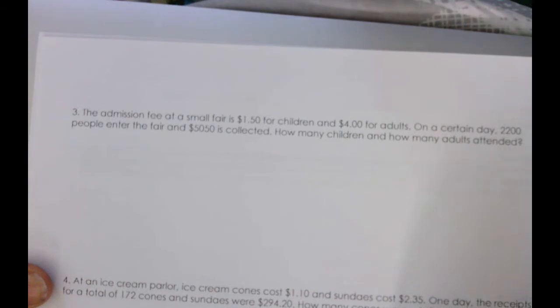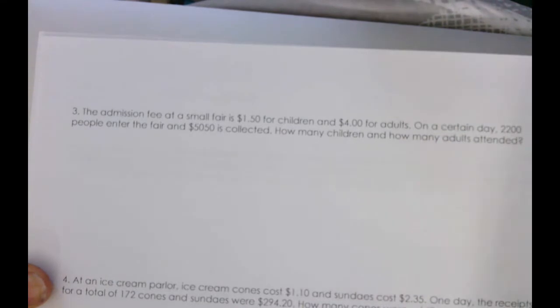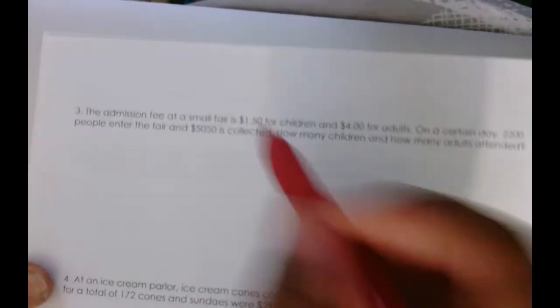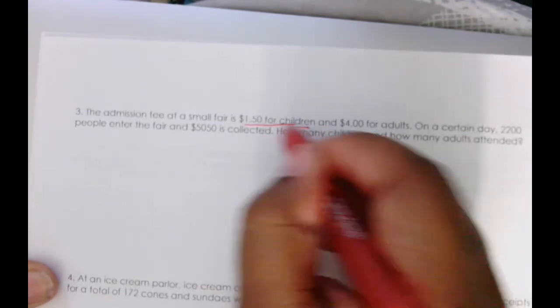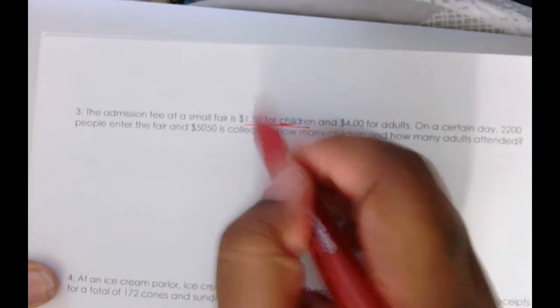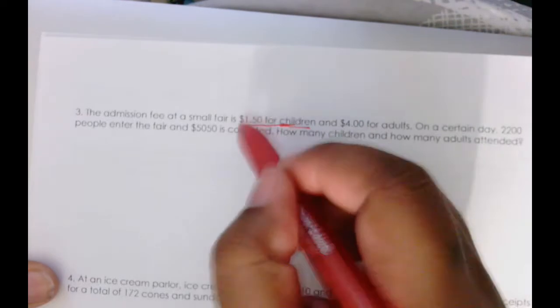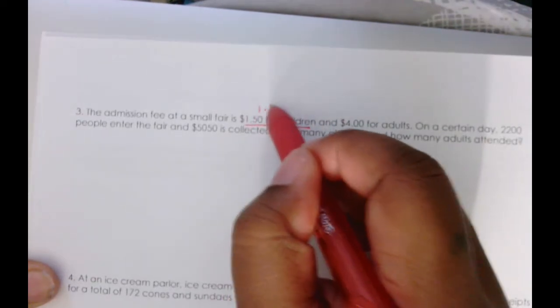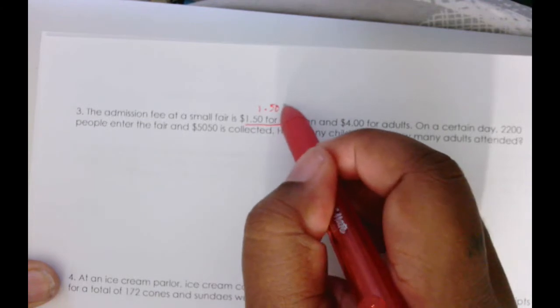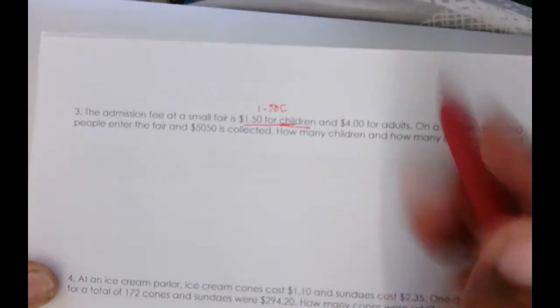So the first thing I want to do is try to figure out what all this means. I know that there are two rates in which they charge tickets. They charge $1.50 for each child, so that's 1.50 per child, or 1.50 times however many children there are. That's going to be 1.50c. And $4.00 for each adult, 4.00a.